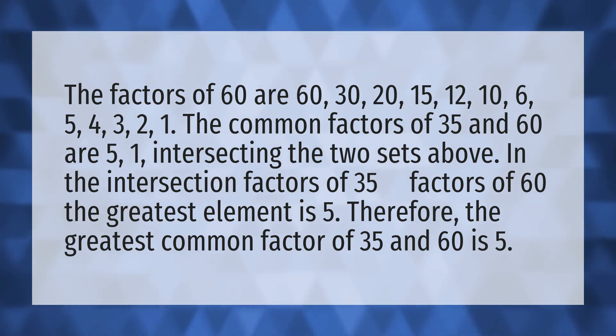In the intersection factors of 35 intersection factors of 60 the greatest element is 5. Therefore, the greatest common factor of 35 and 60 is 5.